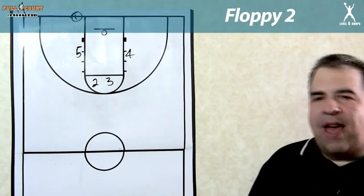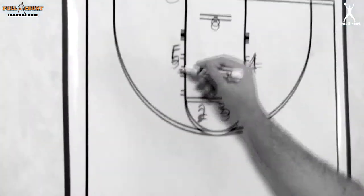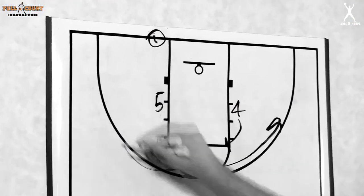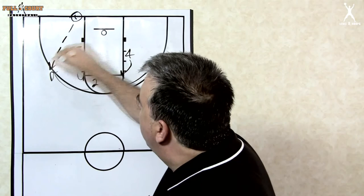Here's the same floppy action off out of bounds. Again, five is going to screen for two, four is going to screen for three. They both pop off the screen. One makes the pass to two.